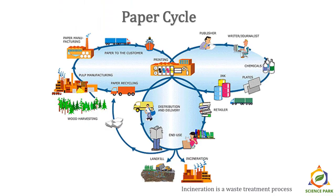After watching that video, it must be clear how paper is manufactured in factories. From the video, it is also clear that the raw material for making paper is wood — so Mother Nature gives us the raw material to make paper. Once paper is manufactured in the factory, it goes through trucks and distributors and then goes for printing.